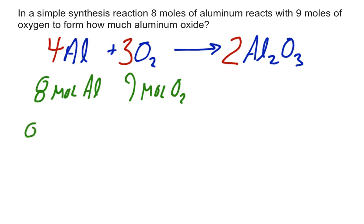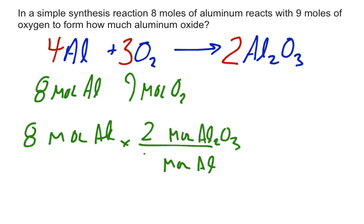So if I change eight moles of aluminum into aluminum oxide, put the two on top, four on bottom. Eight times two is 16 divided by four. I will form four moles of Al2O3.